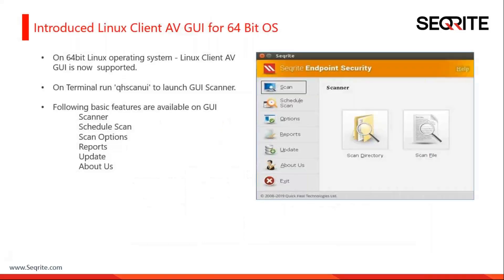We have also introduced Linux AVGUI on 64-bit operating systems. To access it on the terminal, just run QH scan UI. It will launch the GUI scanner offering basic features like scanner, schedule scan, scan options, reports, update, and about us.